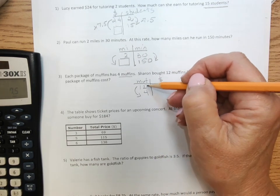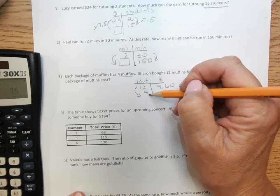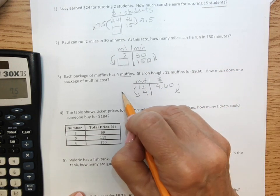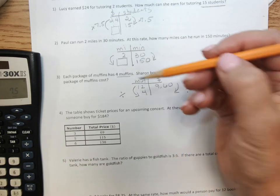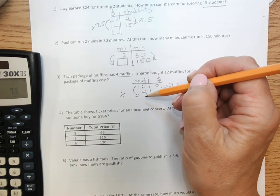And because I'm going from a big number to a little number, I will be dividing by my helper. Because I'm going from big to little.